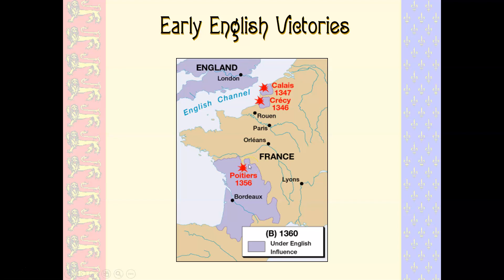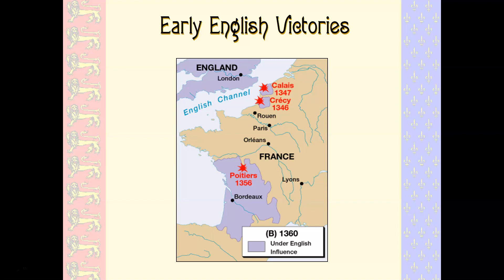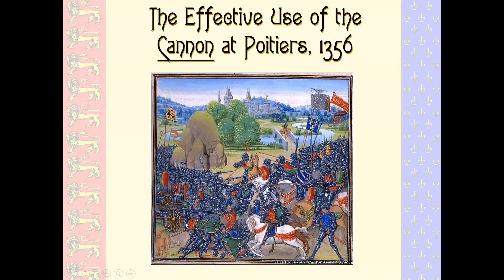The Hundred Years War is actually interrupted by the outbreak of the plague, and the armies kind of go back home and have to wait out the plague. We're also right on the cusp of new technologies, and you'll even see the beginnings of gunpowder. It's not very effective yet, but it's going to be, and you even see some effective use of cannon at places like Poitiers in 1356.